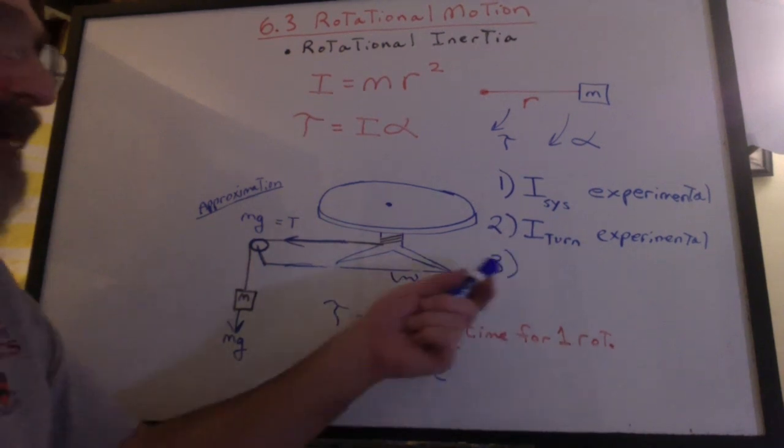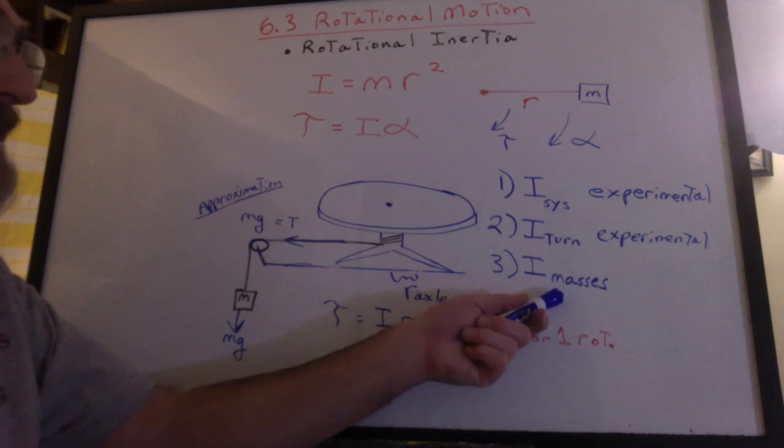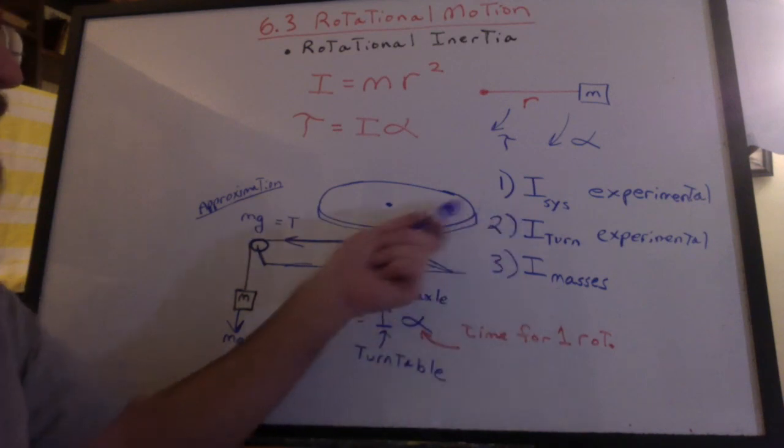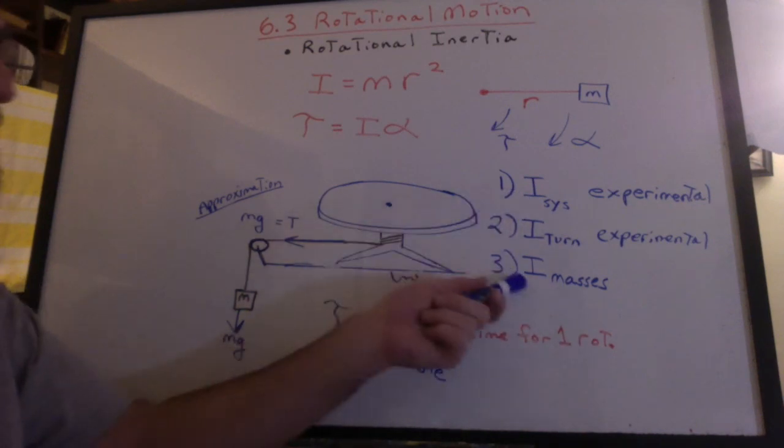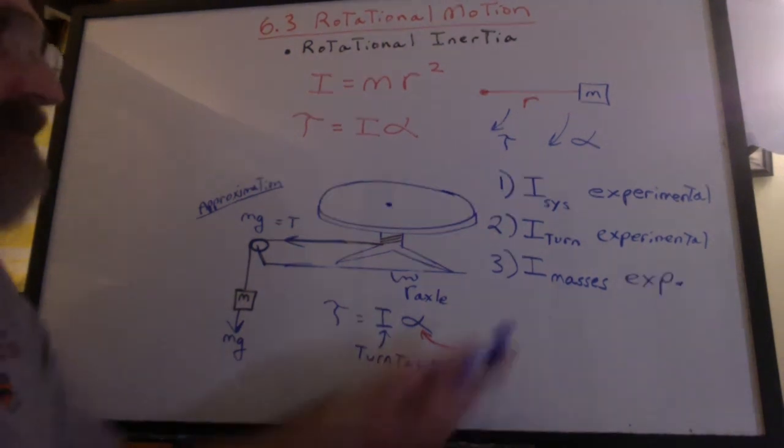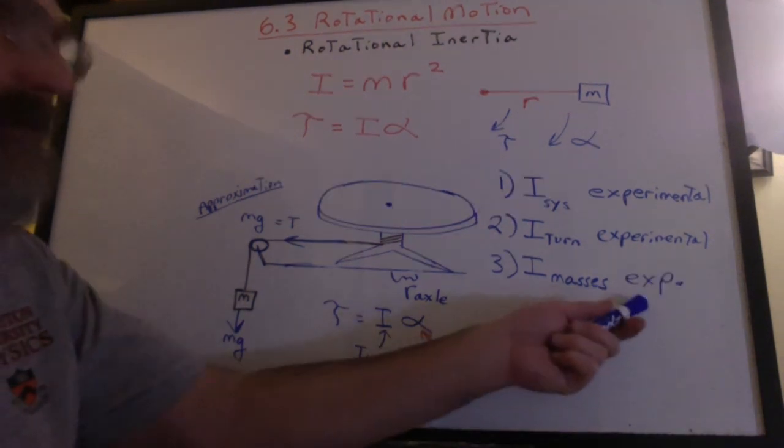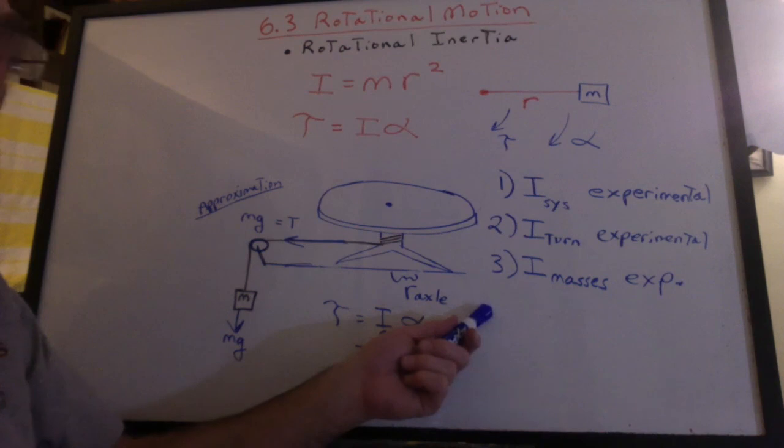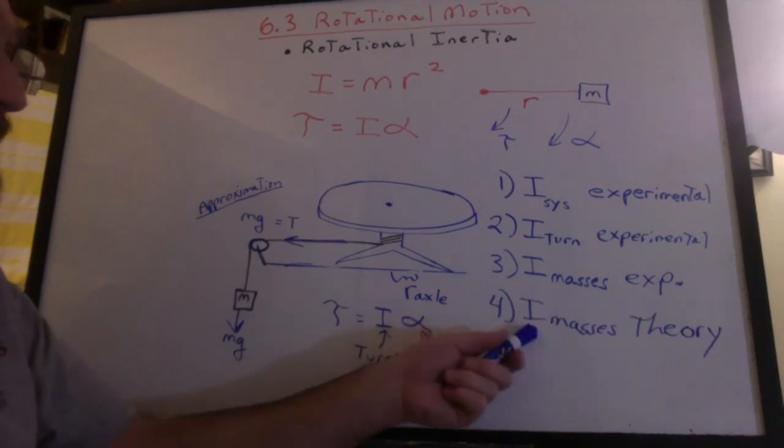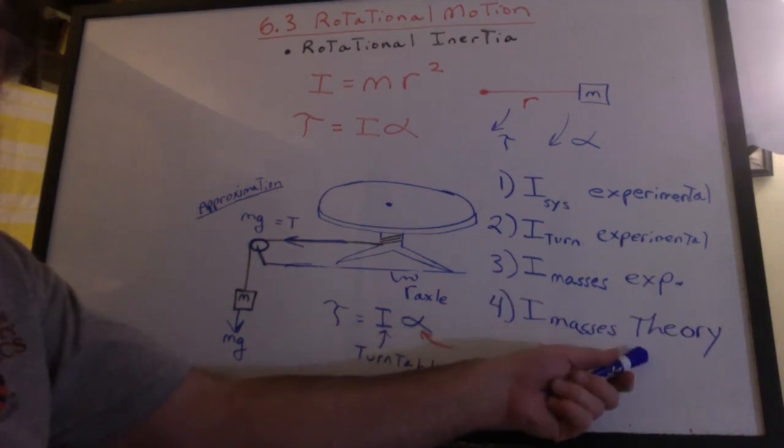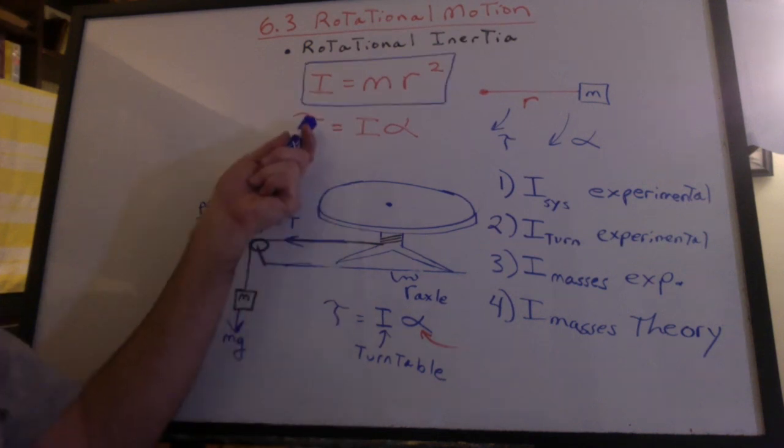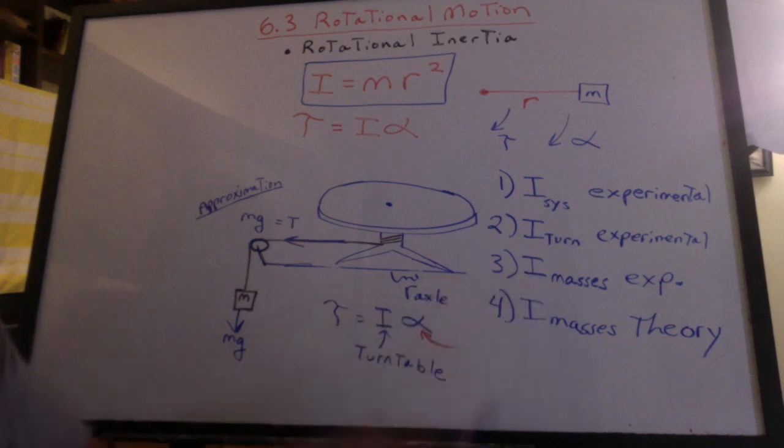Well, guess what we want? We want the inertia for the masses. Just subtract the turntable from the inertia of the system. And so we'll have the inertia for the masses experimentally. What are we going to do? We need the inertia for the masses theoretically. How do we get that? Here's the theoretical formula. Let's get that number and that number and compare the two.